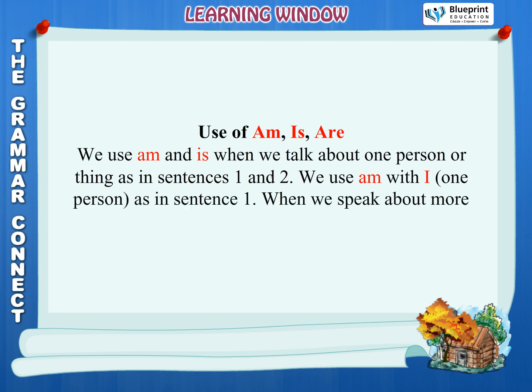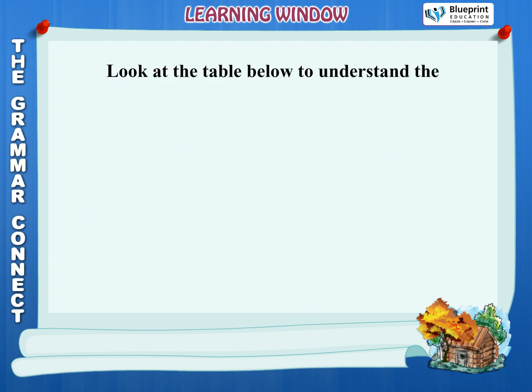When we speak about more than one person or thing, we use are in sentence three. Look at the table below to understand the correct use of am, is and are.